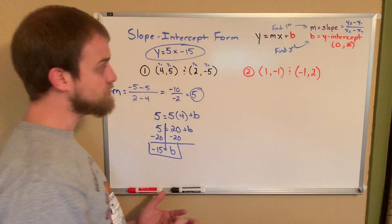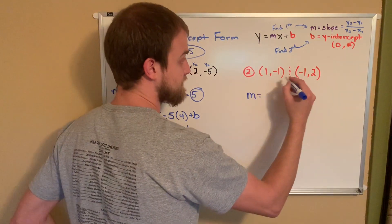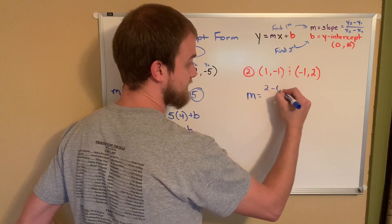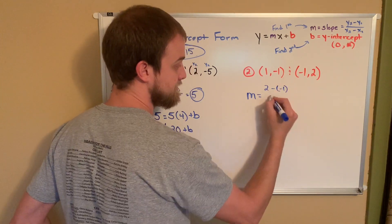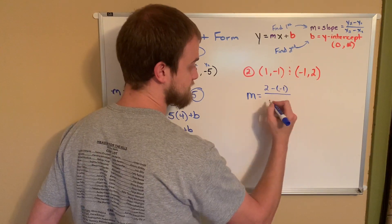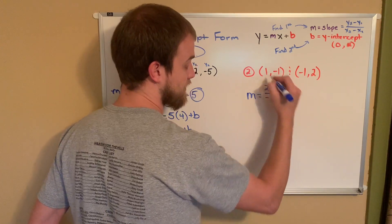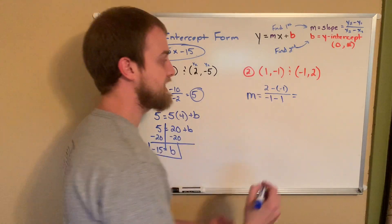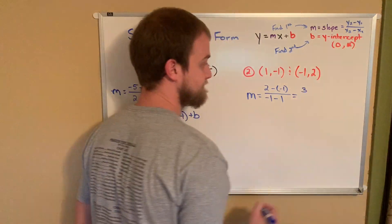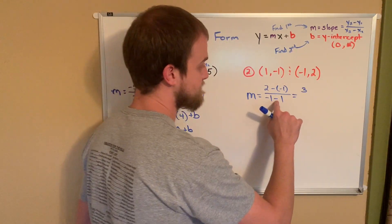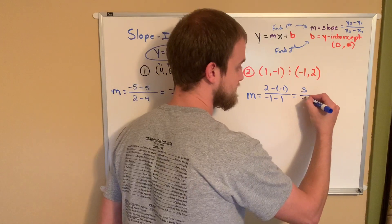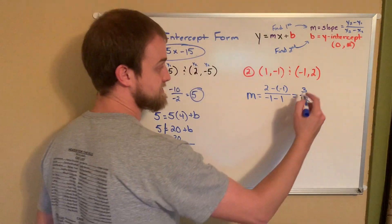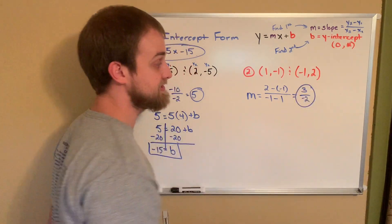Again, same thing for number 2. We're going to find our m. And we're going to take our y₂ value, which is 2, minus our y₁ value, which is negative 1, over our x₂ value minus our x₁ value. 2 minus negative 1 is 3. Negative 1 minus 1 is negative 2. Okay, well, my slope turns out to be an improper fraction this time, and that's okay.